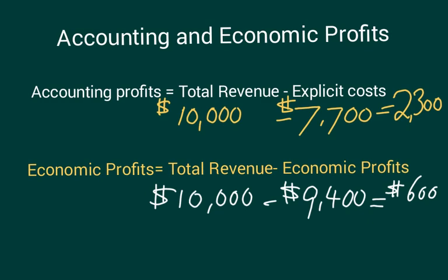— instead of owning this business, perhaps the owner would have been better off working for another company, which would have earned them more money. When economic profits are negative, assuming that's the case every month, it would be better for the business owner to shut down. So even though accounting profits may be positive, if there's an economic loss, it would be better for the business to shut down from a purely financial point of view.